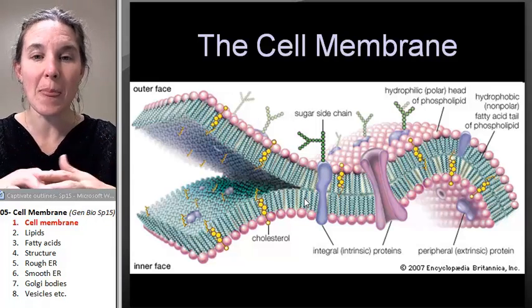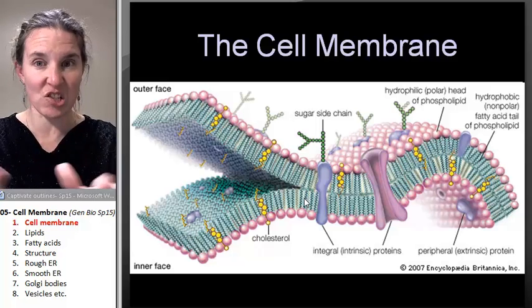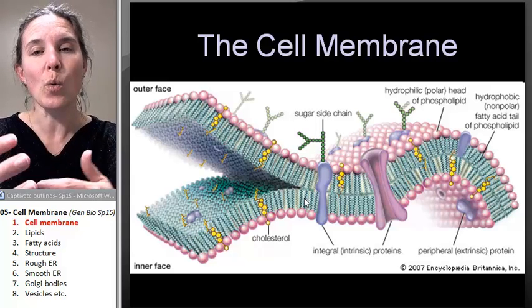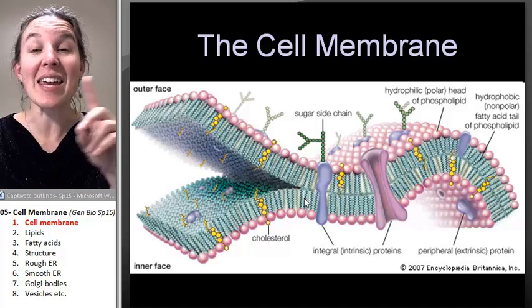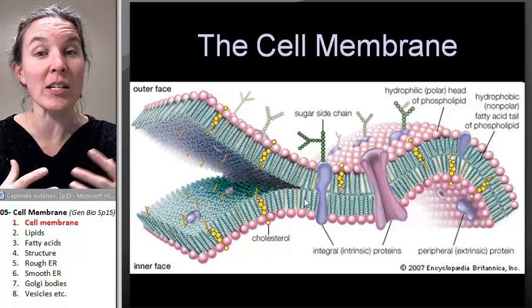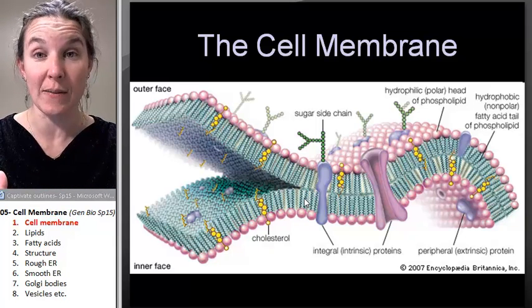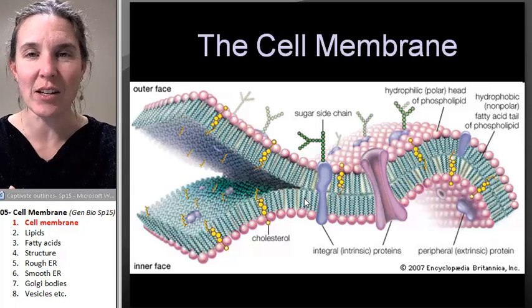So the cell membrane and all of that stuff that's embedded in it will help determine what can go in and out of the cell. And the characteristics of the cell membrane are going to determine what functions that cell can carry out.